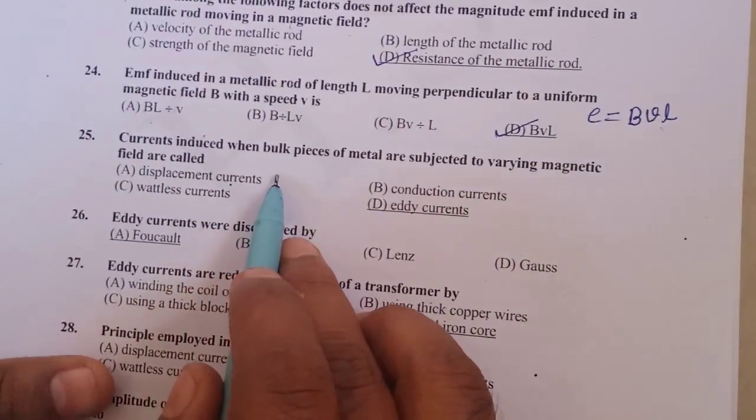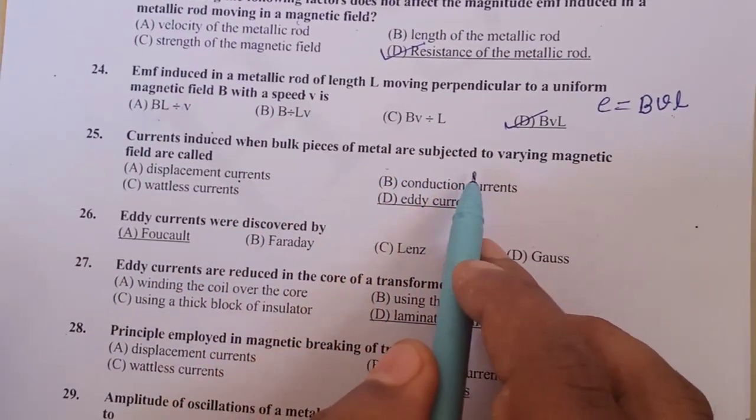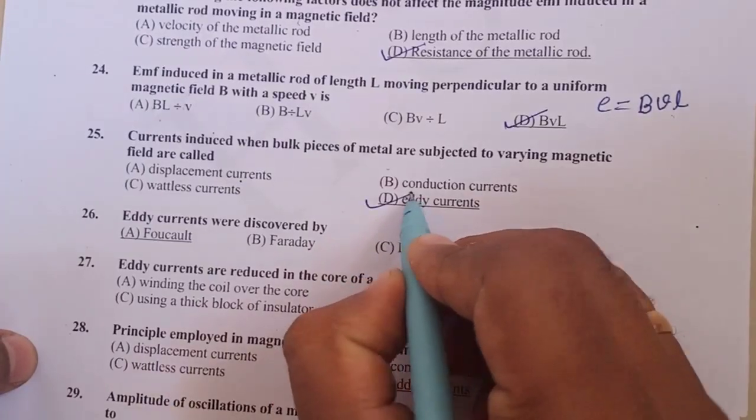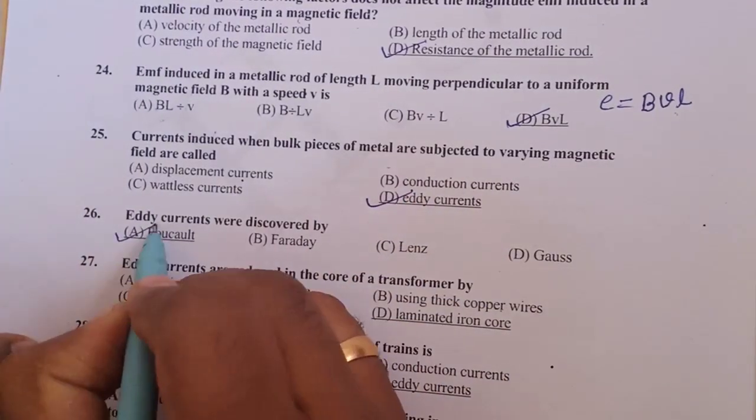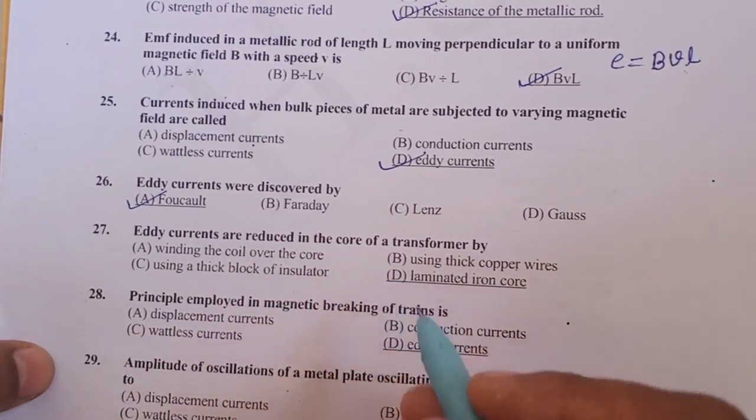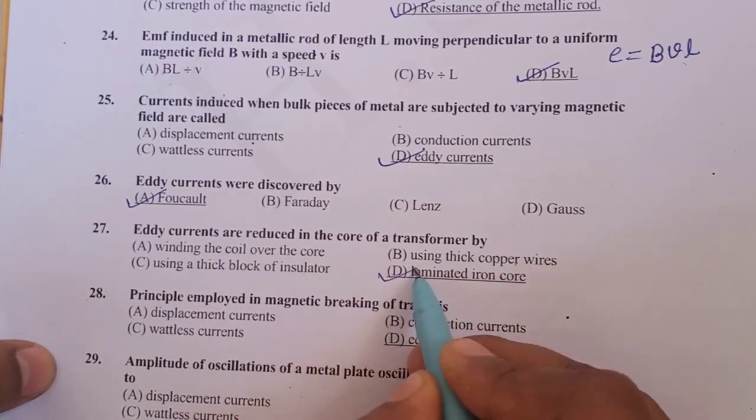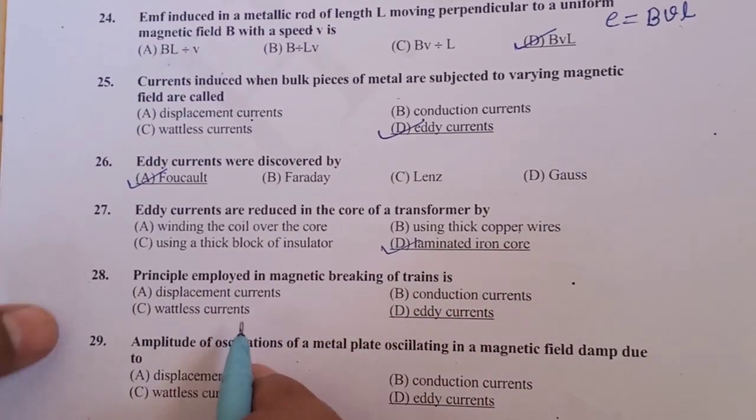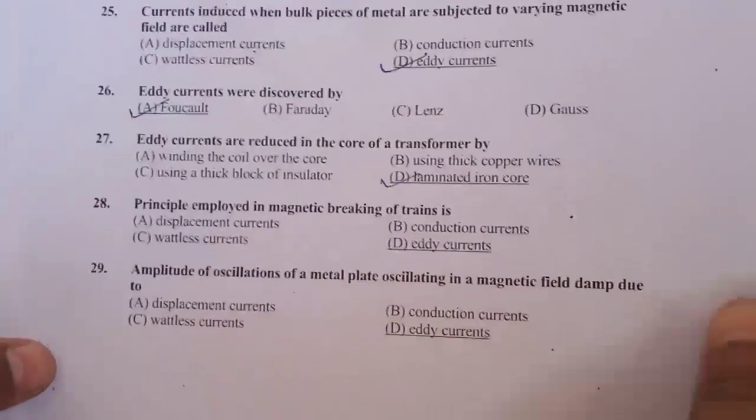Current induced when bulk pieces of metals are subjected to varying magnetic field is called eddy current. It was discovered by Foucault, therefore it is also called Foucault current. Eddy currents are reduced in a core of transformer by laminating the core iron core.